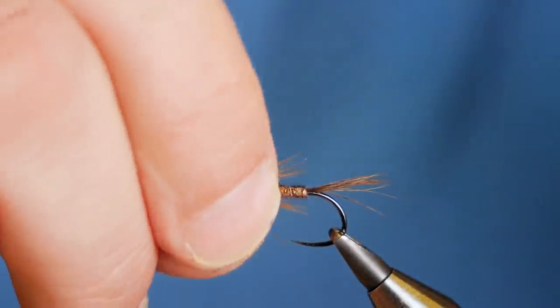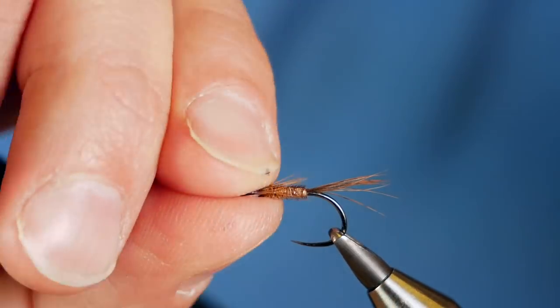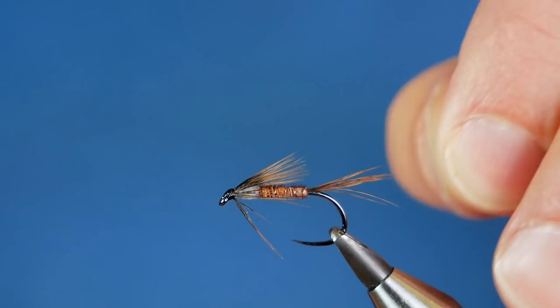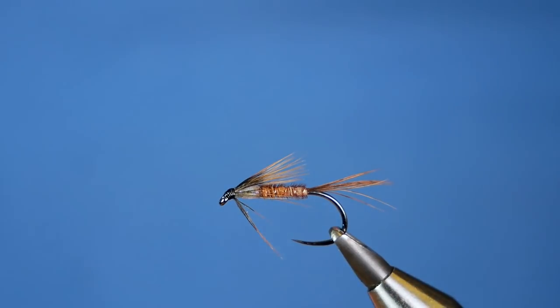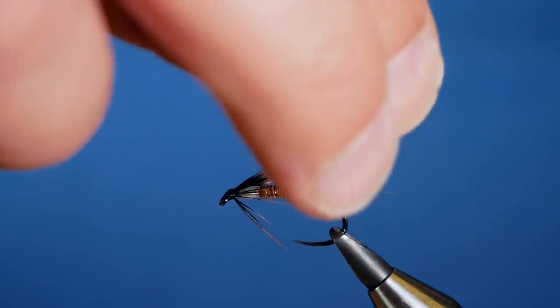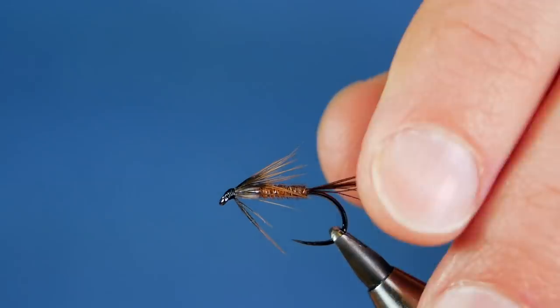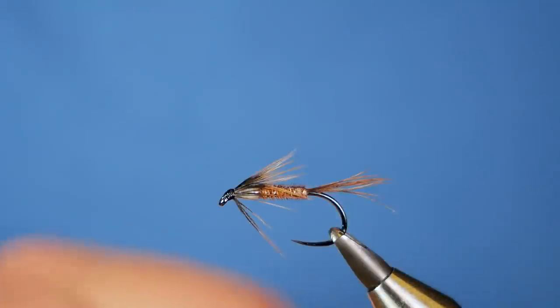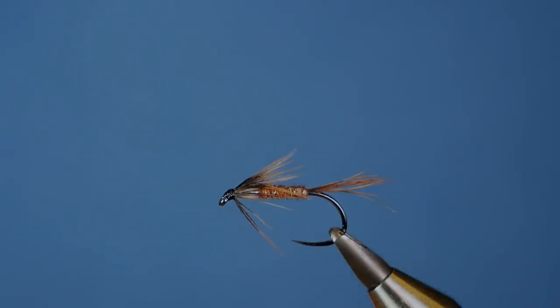And that is a deadly little fly. I know it might not look much sitting here in the vise, but fished in a top dropper or a middle dropper, this fly is absolutely gold. Thanks very much for watching. If you haven't subscribed to the channel, please click on the button before you go, and I'll see you all next time.